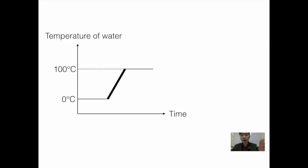Where the upwards line is, is where the temperature of water is increasing. Where the two straight lines are, is where the change of state is occurring. So when the temperature is increasing, the change of state does not occur.